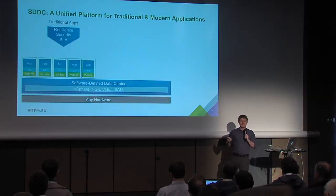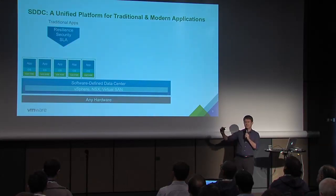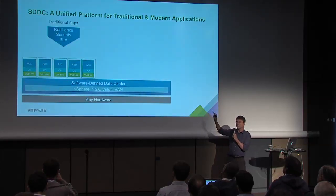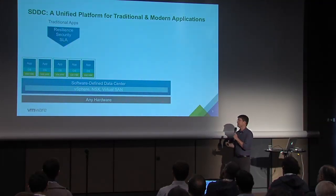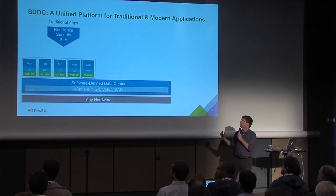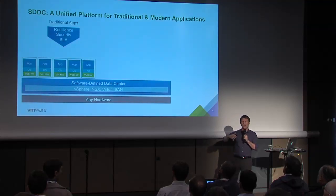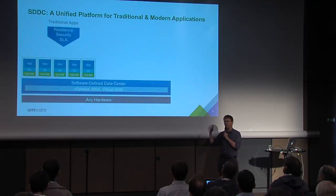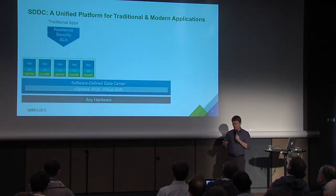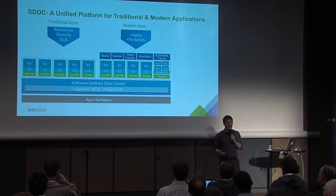VMware's philosophy around how to achieve this is to build the Software Defined Data Center — a software abstraction layer that can go on top of any hardware across compute, network, and storage to virtualize those resources and let you automate and consume that infrastructure. Traditionally VMware is well known for industry leadership in scale-up applications needing high availability, disaster recovery, really good SLA, and strong security. But in the past couple of years we've also started investing heavily in the next-gen or third-platform application space.